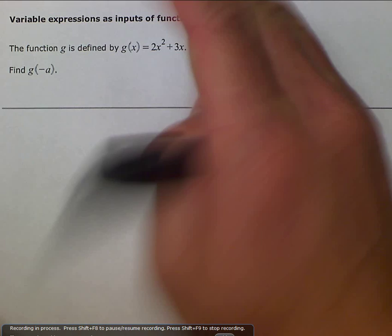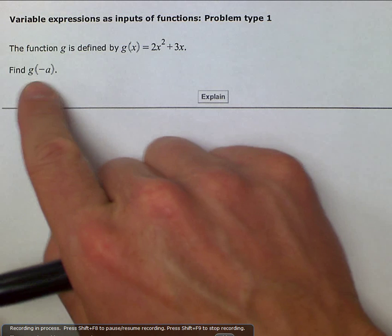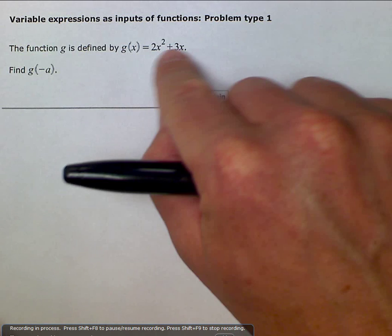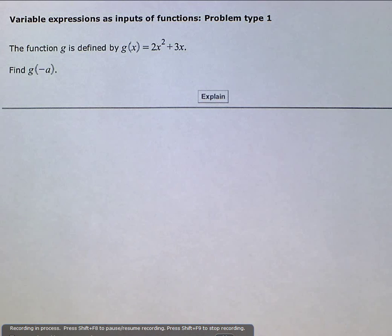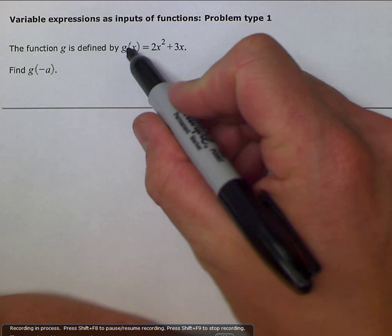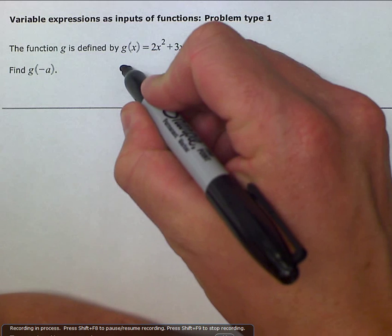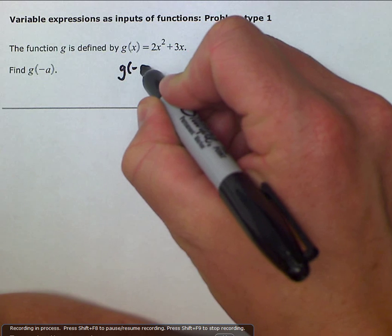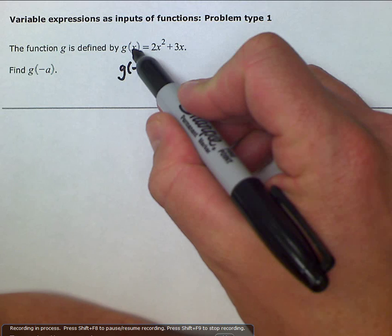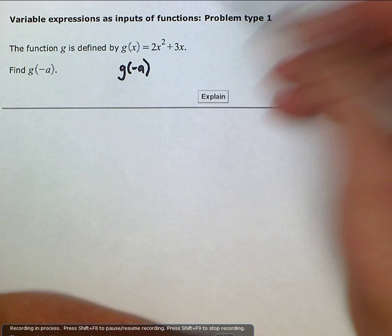For example if we wanted g of 2 where 2 is inside the parentheses we would replace all of our unknowns with 2 and then we could solve. Well here it's asking us to replace the x's. Instead of g of x we want to rewrite it g of negative a. And all that's saying is replace the unknowns, or here as defined by x, replace all the x's with negative a's.